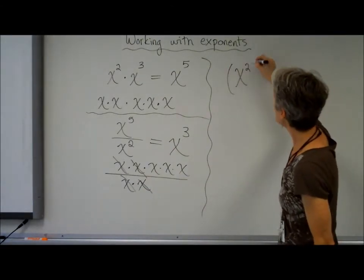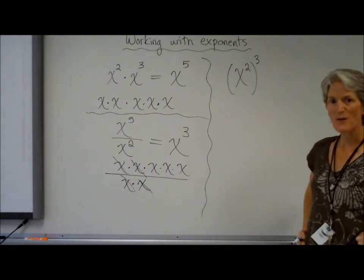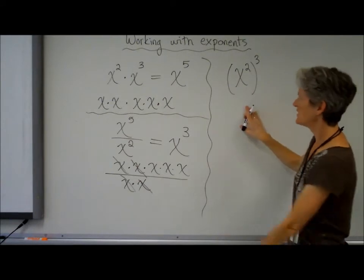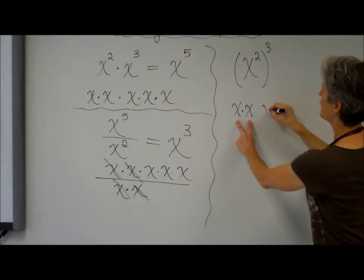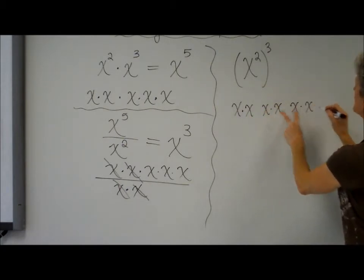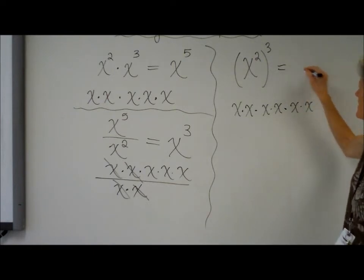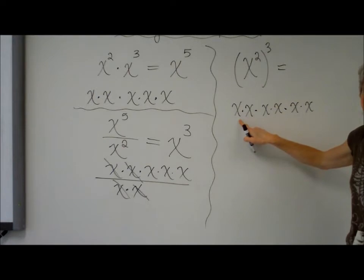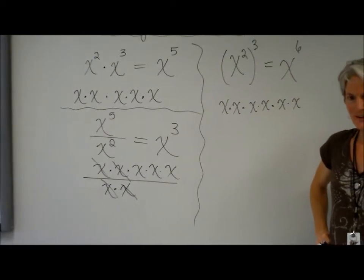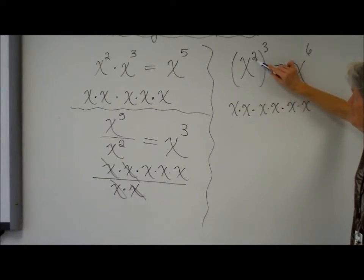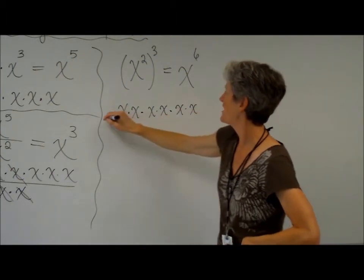What if I have x squared and I'm raising that to another power — to the third power? So we have a power to a power. x squared is x times x, and I have three of those: one x squared, a second x squared, a third x squared. Multiplying them all together: x times x times x times x times x times x. That's x raised to the sixth, because I'm multiplying x times itself six times.